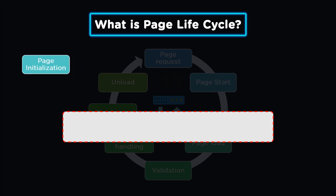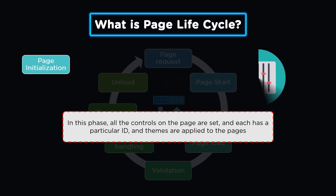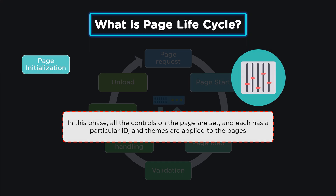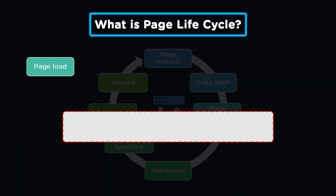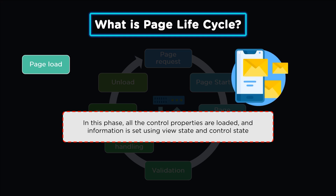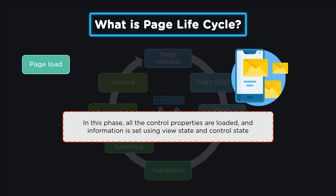The third phase is the page initialization phase. During this phase, all controls are initialized and each control is provided with a specific ID. Themes are also applied to the applications. The fourth phase is page load, where the application is provided with controlled properties and information is set using view state and control state.